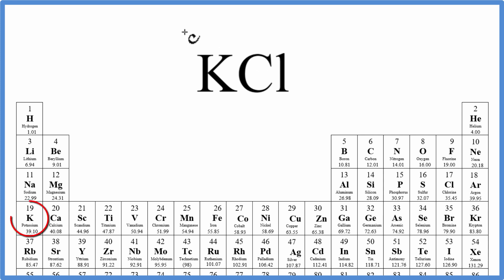So on the periodic table, potassium K is 39.10, and the units are grams per mole. I'll write those at the end. And then chlorine is 35.45 grams per mole.